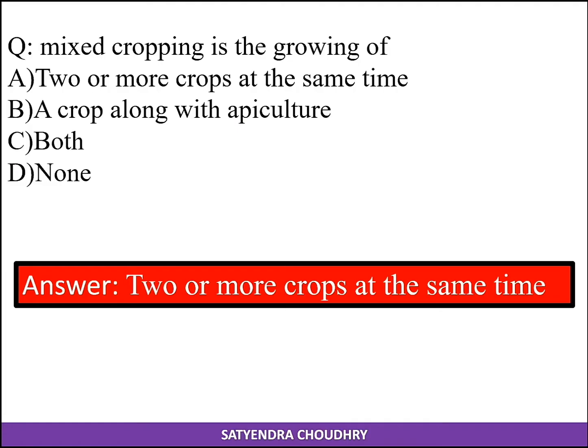First question: Mixed cropping is the growing of two or more crops at the same time in the same field.